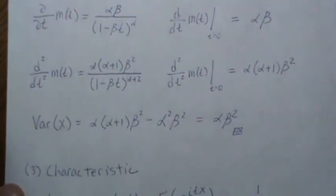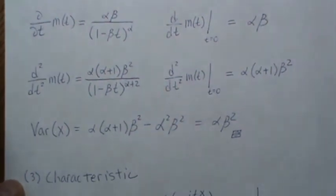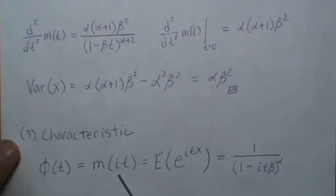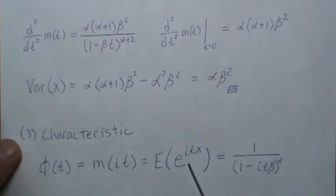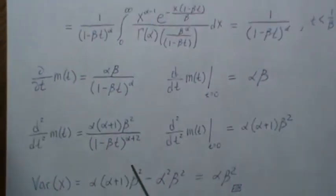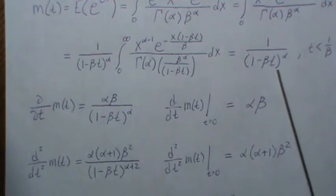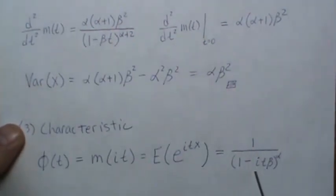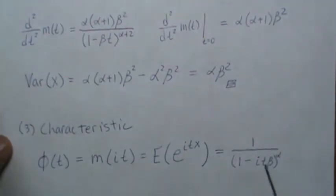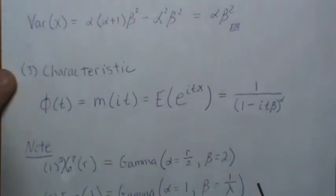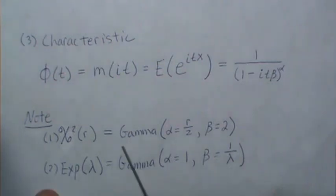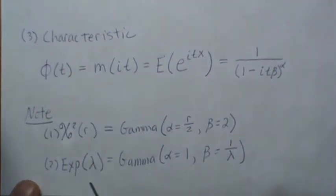Now the characteristic function will be a little bit easier because we've already calculated the moment generating function. And the characteristic function is the moment generating function evaluated at it, which is this expected value, but it really means just stick in an it wherever there was a t. So this was our moment generating function, so then our characteristic function is this, and you can do the same thing, take derivatives of it if you need to. Now since we just did the gamma distribution, by default, we know the chi squared and the exponential distributions because they are special cases of a gamma distribution.